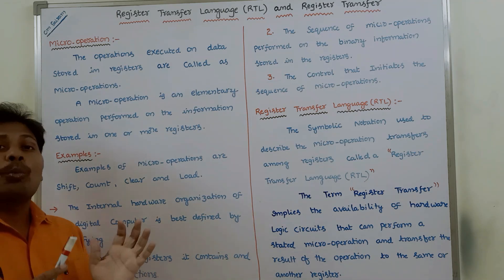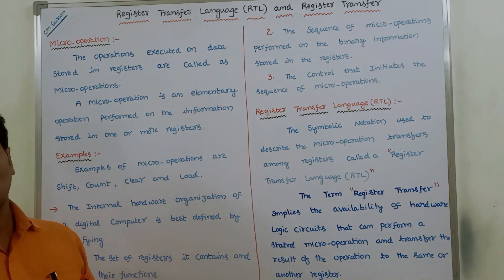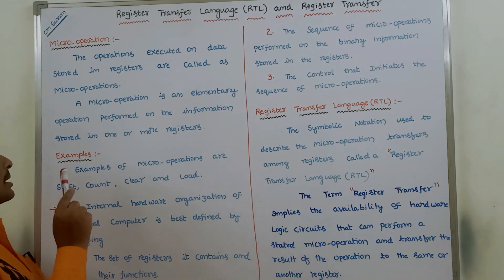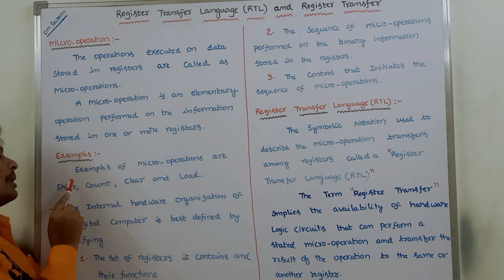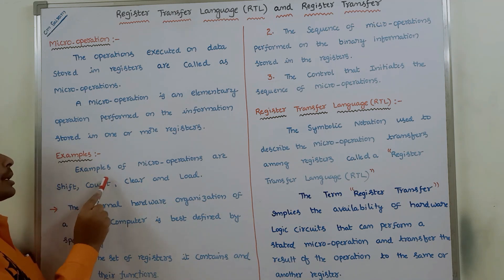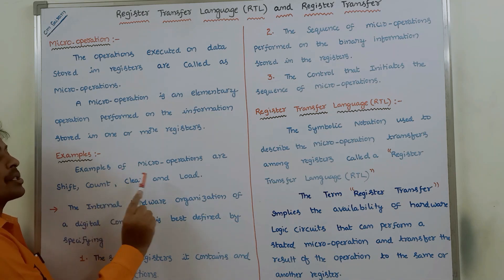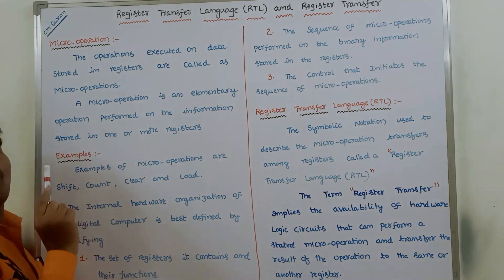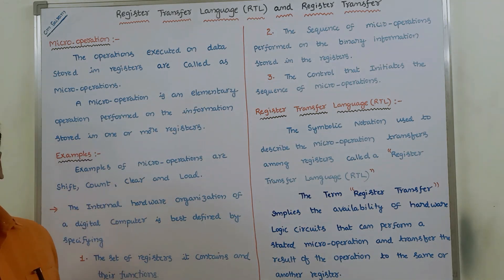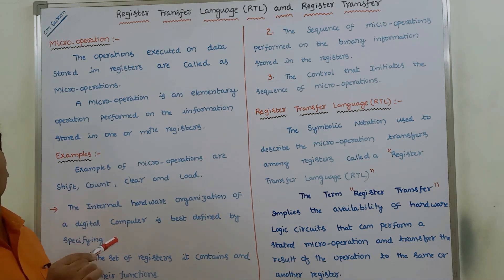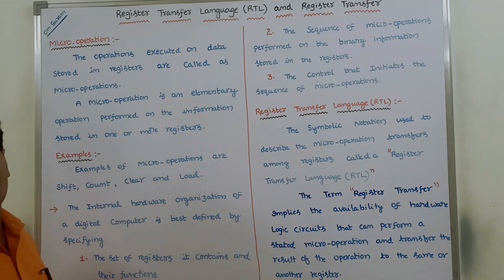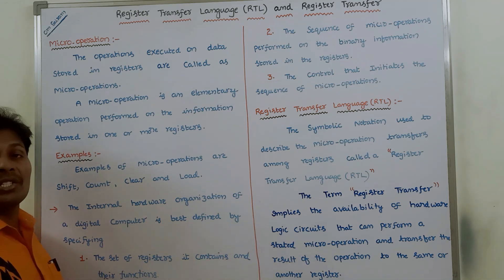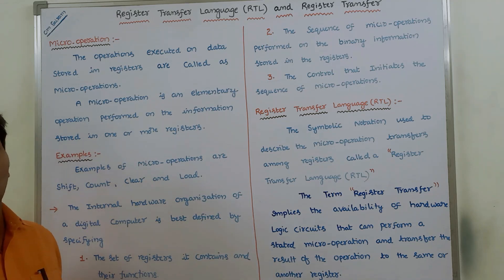Next, what are the examples of micro operations? The examples of micro operations are shift operation, count operation, clear operation, and load operation. To perform the operation, the operand data is stored in the registers, and by using that data we perform the operation — then that operation can be called a micro operation.